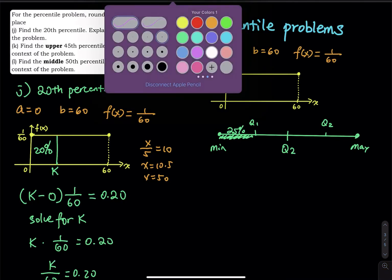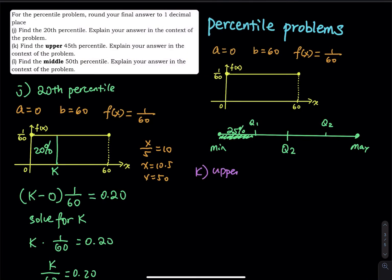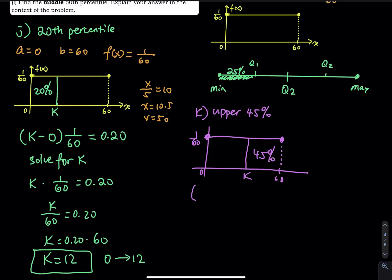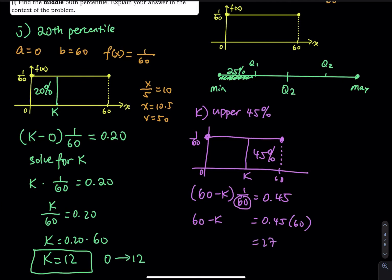For the upper 45 percent: draw a graph from 0 to 60 with height 1/60. You cut 45 percent on the right and find the unknown K. To get the probability, take maximum minus minimum times height equals 0.45, so 60 minus K times 1/60 equals 0.45. Multiplying both sides by 60 gives 60 minus K equals 0.45 times 60, which is 27.